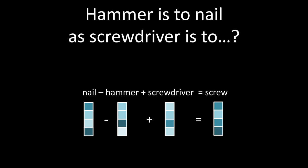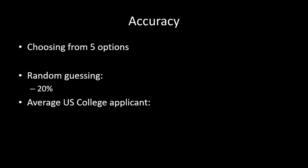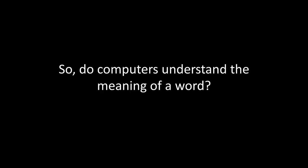So let's test our computer model. We do the analogy test where we choose from five options. If you were randomly guessing you'd get 20% on this test. The average US college applicant gets 57% — better than guessing. It turns out these word lists actually do almost as well as US college applicants: 56%. So do computers understand language? I think it would be right for you to still be skeptical — I am also still skeptical. We can both agree that computers do not understand the meaning of words, even though they've performed these analogy tests as well as US high school students.